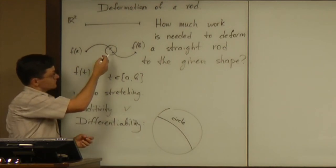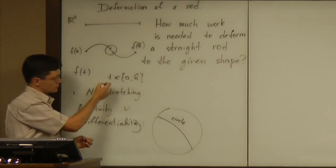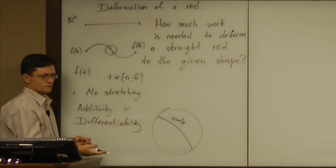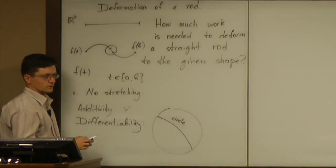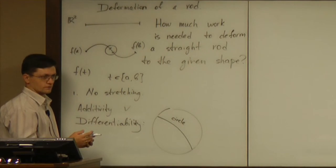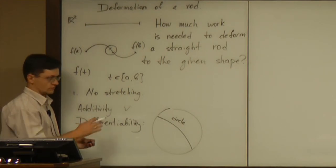Again, you see, we cannot visualize t on the picture. What is it that we can visualize? Curvature. The curvature, yes. That's the radius of that circle.